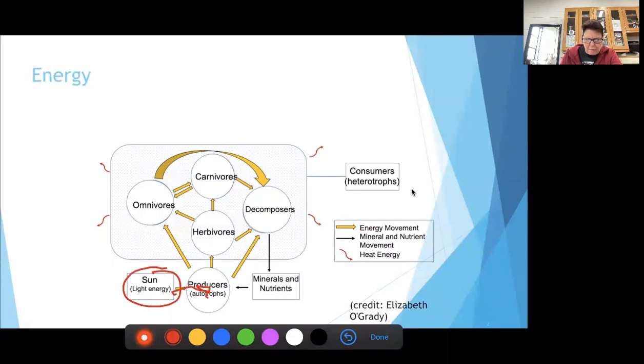Energy goes to our producers which are autotrophs, and then to our herbivores and omnivores. The arrows are pointing to the energy, not who eats who. The energy from the grass goes into your omnivores and herbivores, and then the energy can go to carnivores eating herbivores.